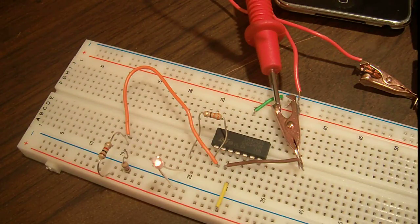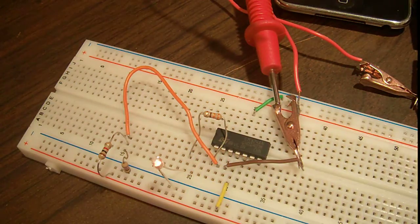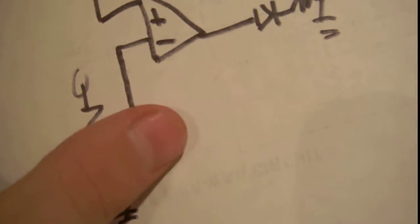And that's how you would use one as a comparator, with no feedback loop. So, you would do it like this, and when... You can obviously, you can use any voltage on either of these, but you can... Oh, there, you can see the LED shining through.